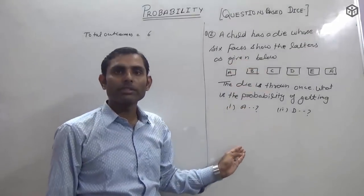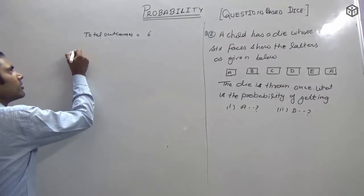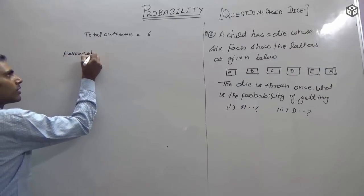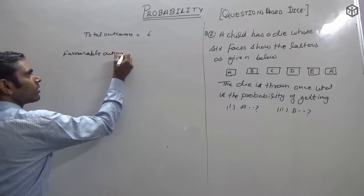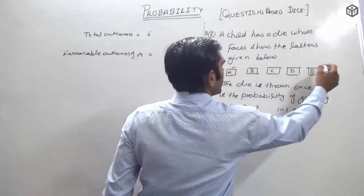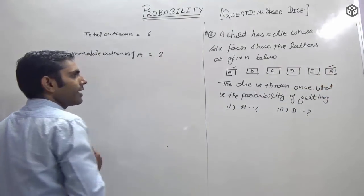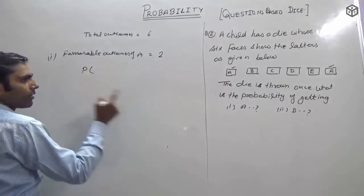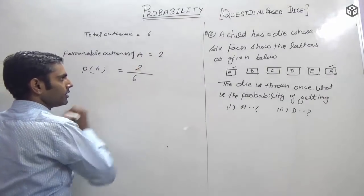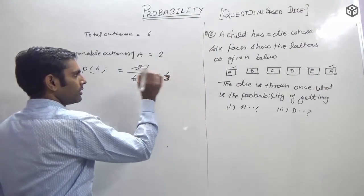What is the probability of getting A? The letter A appears two times on the die. So P(A) = favorable outcomes of A / total = 2/6 = 1/3. You can convert to decimal if needed, otherwise keep it as 1/3.